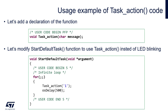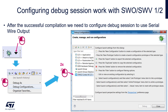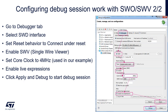After this we can compile the code using the hammer icon. After successful compilation we need to configure the debug session to use Serial Wire Output. Please select Debug Configurations and select the Cortex-M option. Within the debug configuration window, select the Debugger tab, then select SWD interface. Set reset behavior to 'Connect Under Reset'. Enable Single Wire Viewer (SWV). Set core clock to 4 MHz as used in our examples. Enable live expressions. After all these steps, click Apply to save the configuration and click Debug to start a debug session.